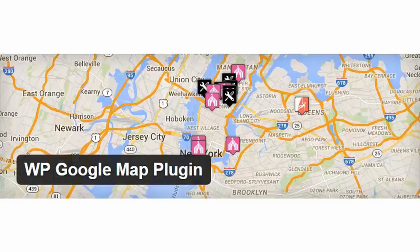Number 4 is the WP Google Map plugin. This is an interactive map plugin that can direct users when they click on the map. It allows you to add a map via shortcode and save multiple locations.